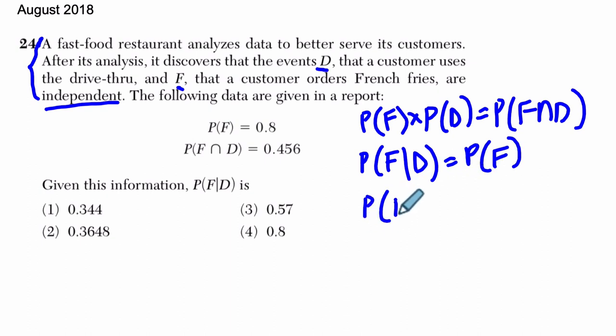The probability that they use the drive-thru given that they ordered French fries would have to be equal to the probability that they use the drive-thru. Okay, so these are the things we can say when there's independence.